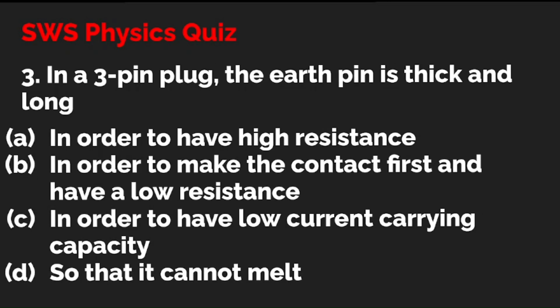Question 3: In a 3-pin plug, the earth pin is thick and long. Why? Option A: in order to have high resistance. Option B: in order to make the contact first and have a low resistance. Option C: in order to have low current carrying capacity. Option D: so that it cannot melt. Why does the earth pin be more thick and long in a 3-pin plug? The correct option is B — in order to make the contact first and have a low resistance.